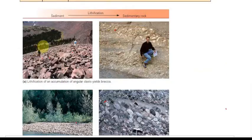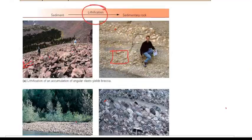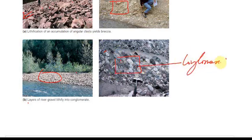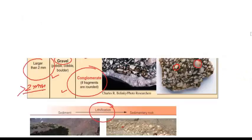You can see here: these are sediments — the angular sediment lithified to form breccia. Here these are rounded sediments from near a river; after lithification over millions of years, they form conglomerate. This is the difference between breccia and conglomerate. You can also see here the gravels and their sizes — if sand is present, sandstone will be formed.